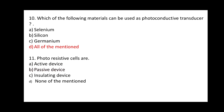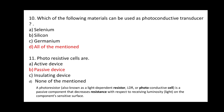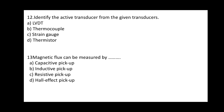Question 11: Photoresistive cells are passive transducers. Option B is correct. A photoresistive cell, also known as a light dependent resistor (LDR) or photo conductive cell, is a passive component that decreases in resistance with respect to the luminous light received on its sensitive surface.